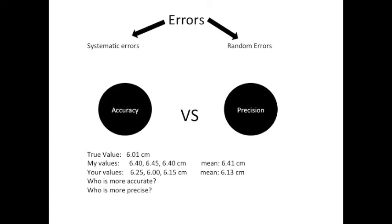Alright. Now, when we come across measurements, we've got these two terms, accuracy and precision. Accuracy means how close is your measured value to the true value. Like, notice my values and your values in the example given. Take a look at the mean. So the true value is 6.01 cm, I got 6.41 cm, and you got 6.13 cm. Now which one is closer to the true value? Of course yours is, so it's more accurate. What about precision? Precision is the measured values, how close are they to each other? So we don't really care about the true value. Now take a look at my values and your values. You can see that my values differ by 0.05 and your values differ by 0.25, 0.15, 0.10. So they vary much more than mine do. So mine is more precise. So I hope you get the idea.